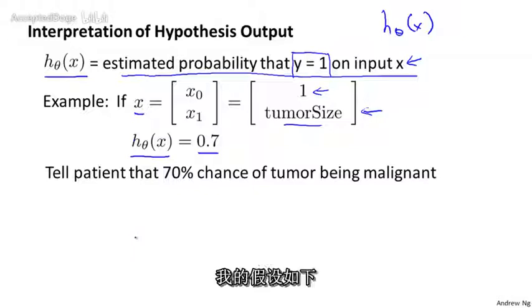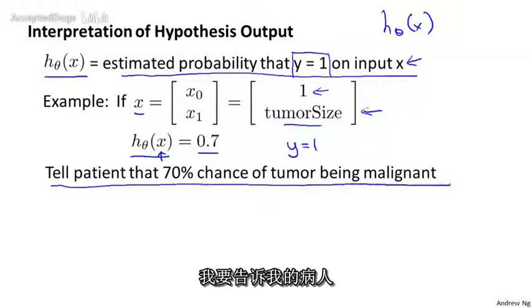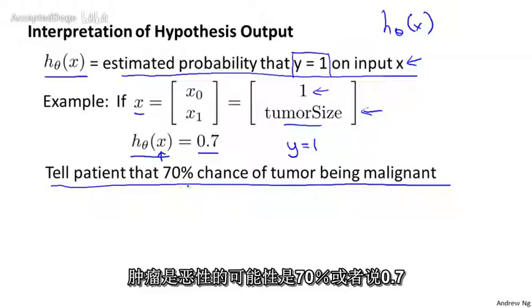I'm going to interpret my hypothesis as follows. I'm going to say that this hypothesis is telling me that for a patient with features x, the probability that y equals 1 is 0.7. In other words, I'm going to tell my patient that their tumor sadly has a 70% chance or a 0.7 chance of being malignant.